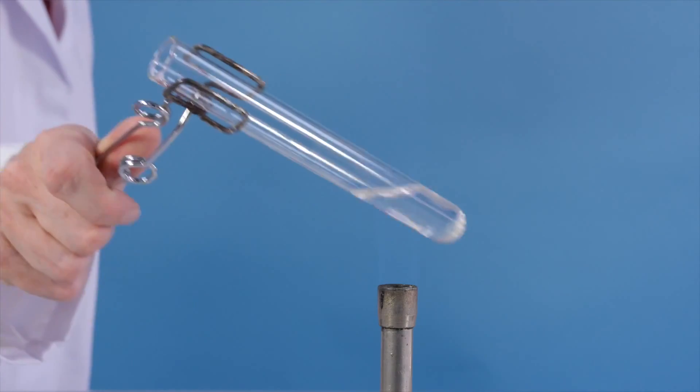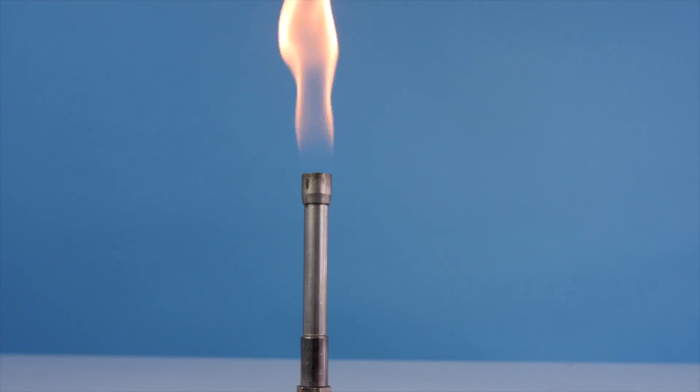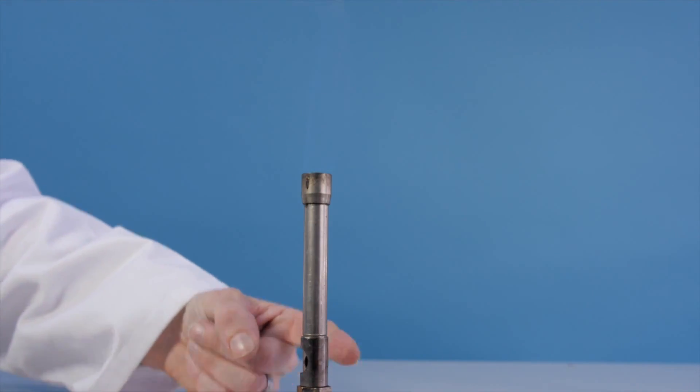Next, gently heat the solution by passing the test tube slowly in and out of the flame. Notice the air hole of the Bunsen burner is half open.